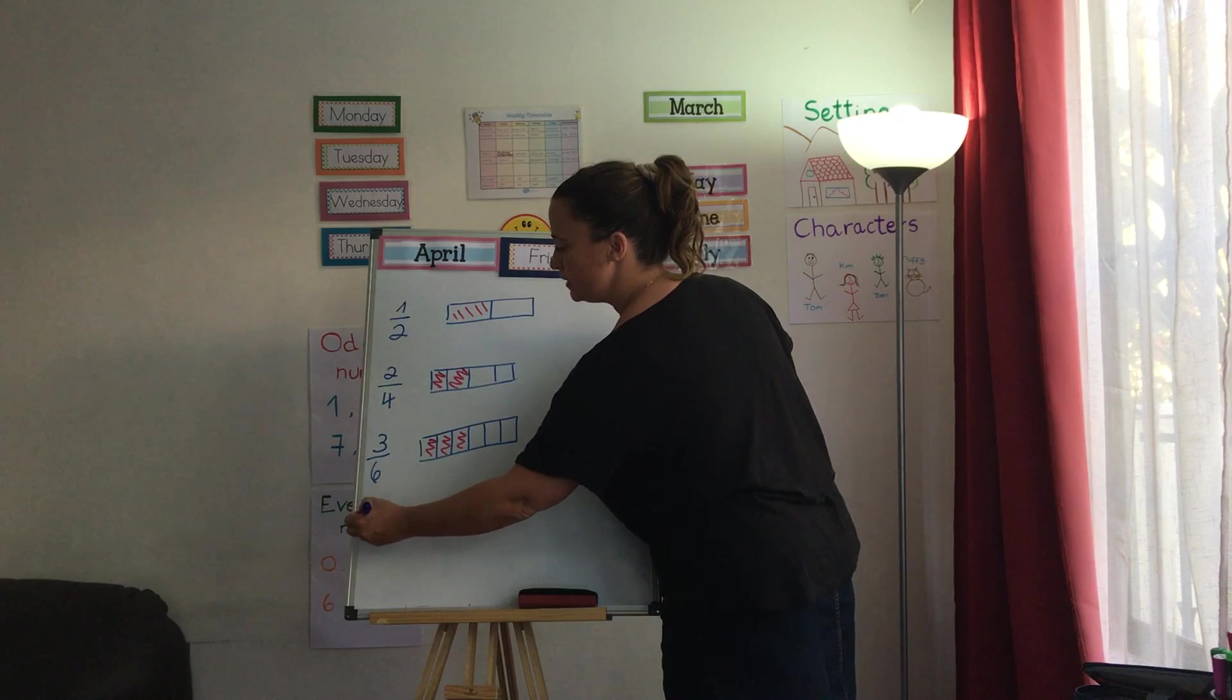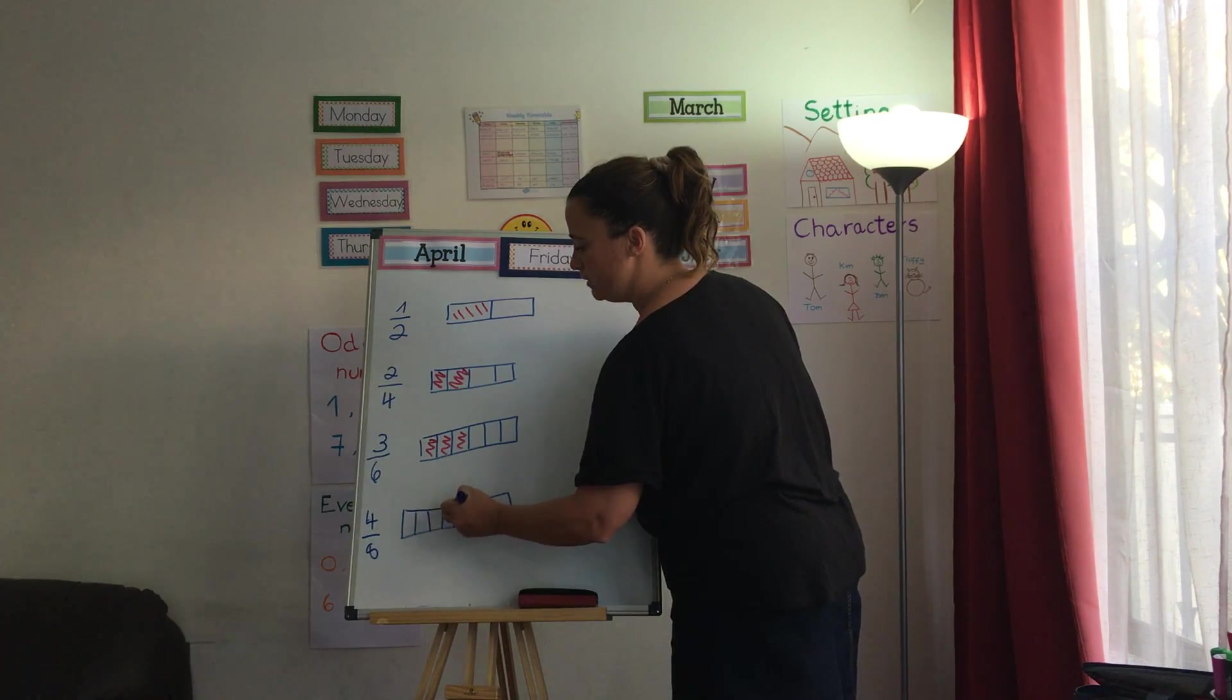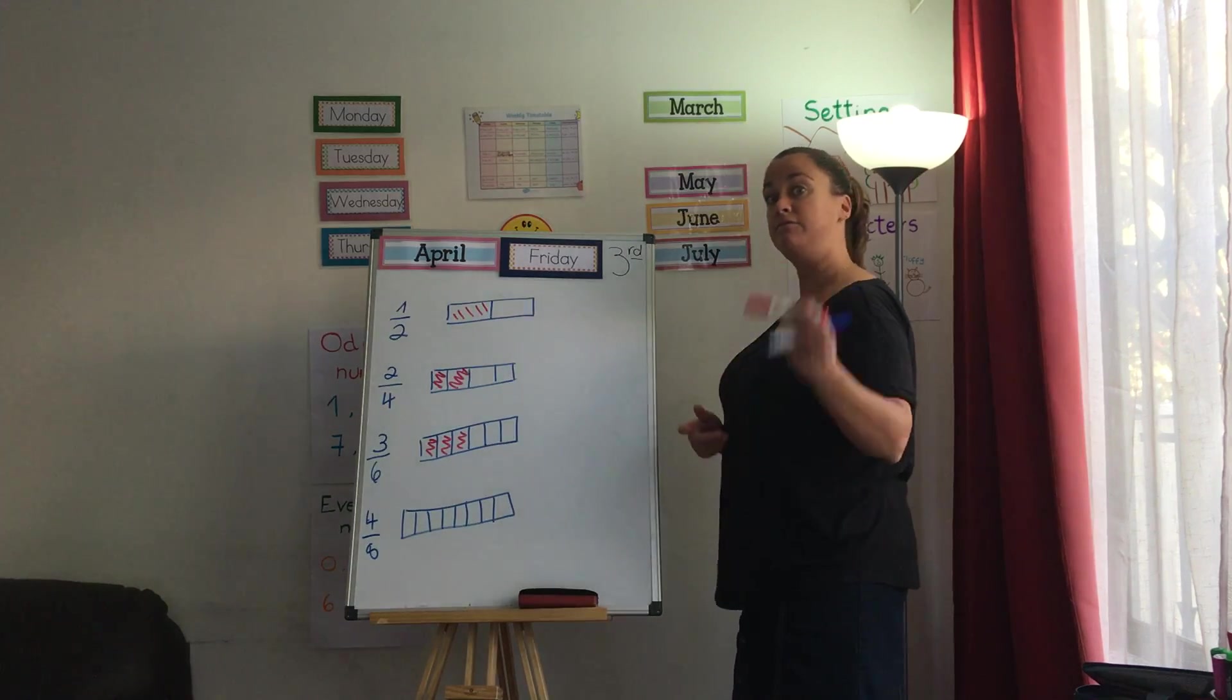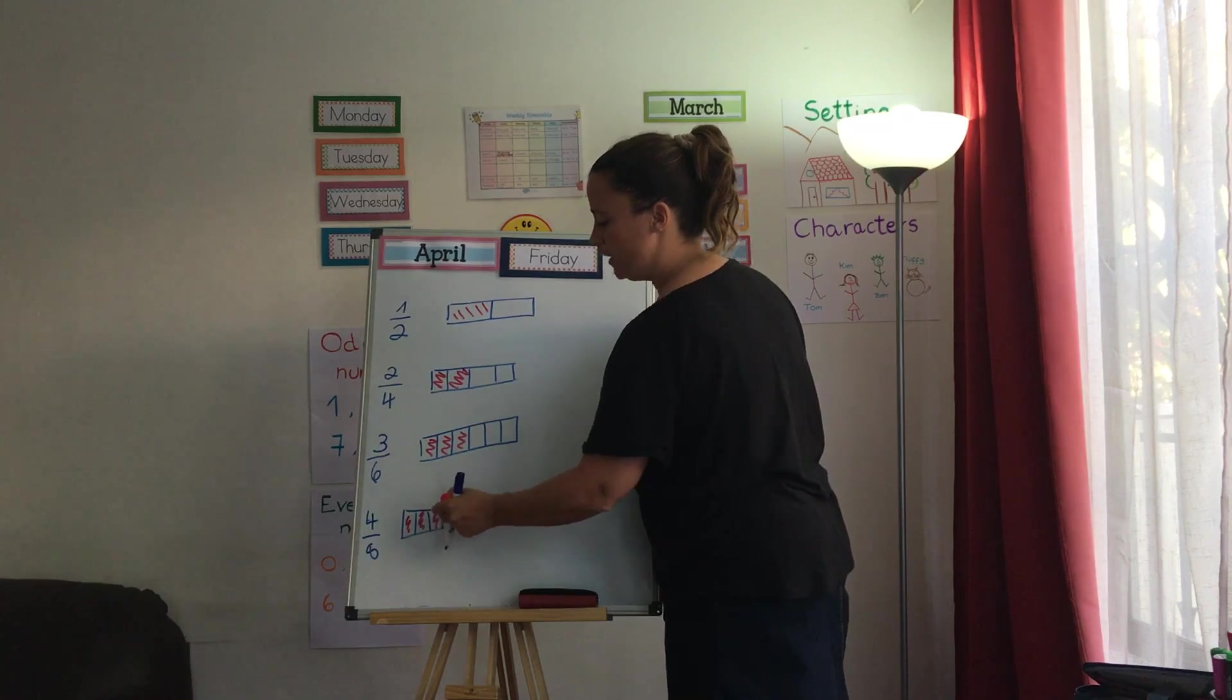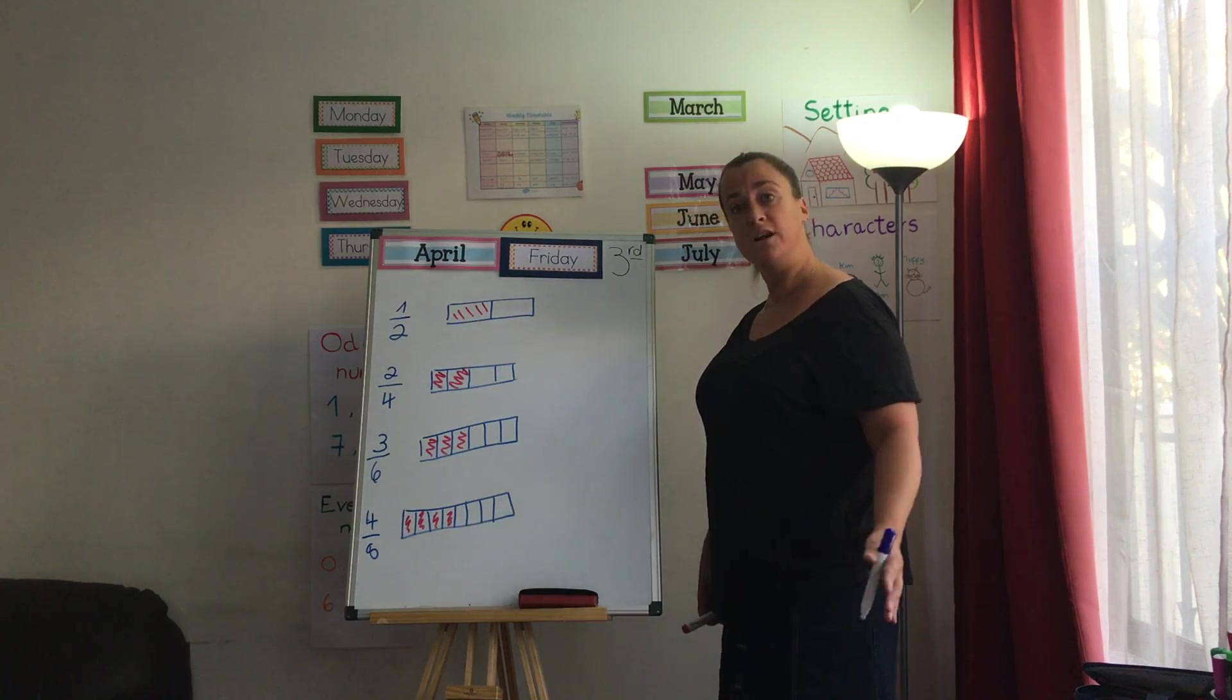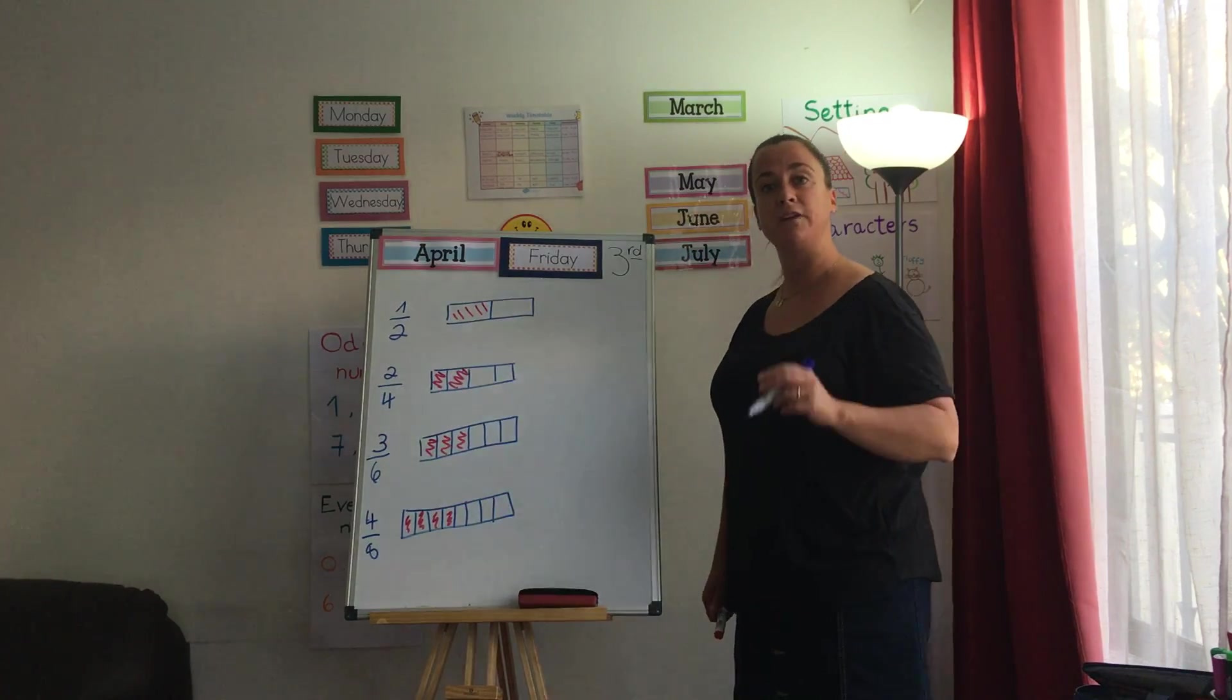If I've got this one. 4 eighths. 1, 2, 3, 4, 5, 6, 7, 8. And I eat 4. 1, 2, 3, 4. I eat 4 out of 8. How many do I have left? I've got 4 left. That means I've got half a chocolate left. Even though they're all different fractions.